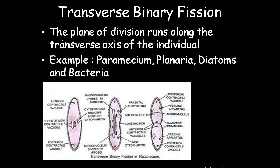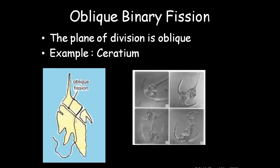Transverse binary fission: the plane of division runs along the transverse axis, as seen in Paramecium, Planaria, diatoms, or bacteria. The cell divides in between the axis into two cells, as shown in the picture. Oblique binary fission: the plane of division is oblique — not equal. The example is Ceratium; you can see in the picture it is obliquely divided into two daughter cells.